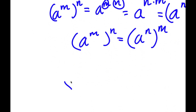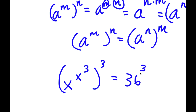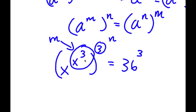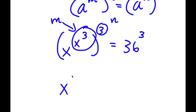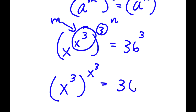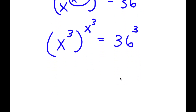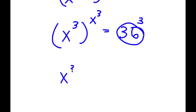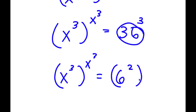So in this case, I have x to the power of x to the power of 3, to the power of 3, is equal to 36 to the power of 3. I can think of x to the power of 3 as m and 3 as n. Since a to the power of m to the power of n equals a to the power of n to the power of m, I can swap those places. So now I have x to the power of 3, to the power of x to the power of 3, equal to 36 to the power of 3. Now 36 is the same as 6 squared, so I have x to the power of 3, to the power of x to the power of 3, equal to 6 squared to the power of 3.